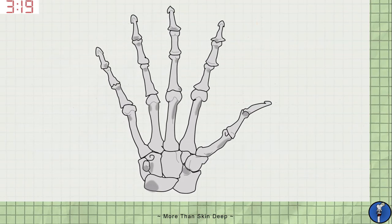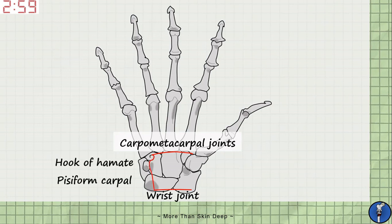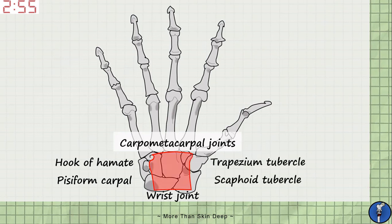A number of important structures pass over these carpal bones on their way into the hand. In doing so, they pass through a channel known as the carpal tunnel. The carpal tunnel's borders aren't rigidly defined, but it begins approximately at the wrist joint and ends in line with the joint between the carpal bones and the metacarpals. Its medial border is a line joining the hook of the hamate to the midpoint of the lunate bone, and its lateral border is a line joining the tubercles of the scaphoid and trapezium carpals.